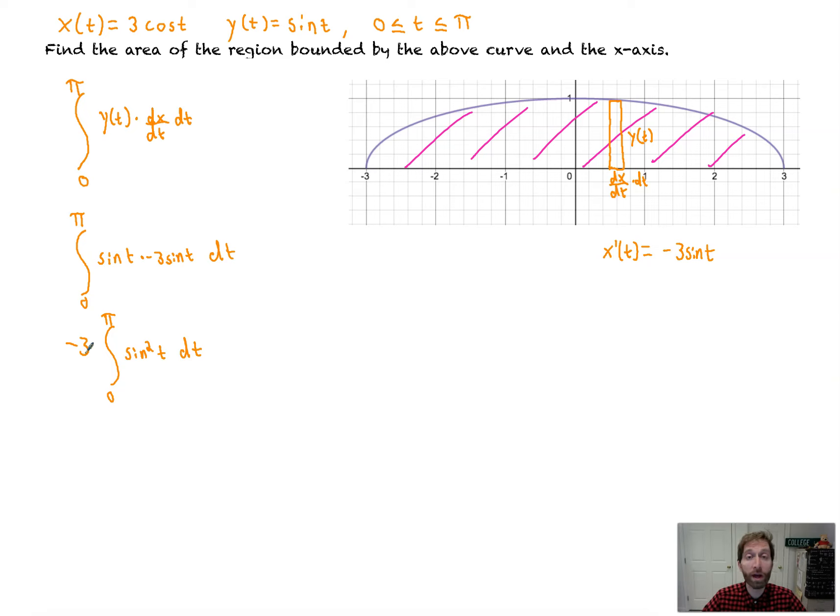That ends up being the integral that will give us the area. Whether we do this by hand or with a calculator, when we evaluate this, we'll get the area of this region. I'm going to do this one out by hand. Remember, if you didn't learn this, you can check out my videos in Chapter 8 on power reduction. Sin²(t) equals (1 - cos(2t))/2. That reduces the power down. So that over 2, I'm going to bring to the outside.